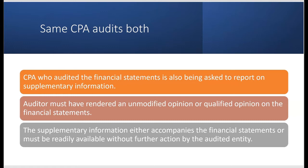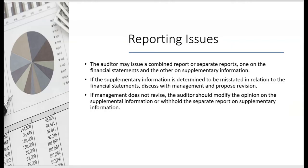The supplementary information either accompanies the financial statements or must be readily available — meaning the user with minimal effort could go to the internet and pull down the supplementary information. The auditor may issue a combined report or separate reports. A combined report involves one report with two opinions: one opinion on the financial statements, and one opinion on whether the supplementary information is fairly presented in relation to the financial statements taken as a whole. Or they could do two separate reports.